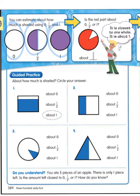All right, number one. About how much is shaded? Circle your answer. Looking at it, most of it's shaded. So about the whole thing, or about one whole, is shaded. Number two. About how much is shaded? Well, I'd say it's about closest to half. Since half is right there, that's pretty close. About half.